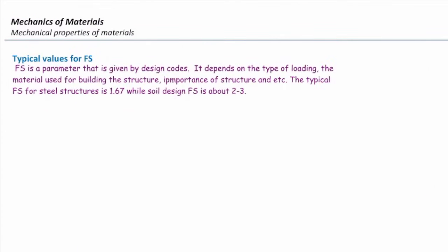The typical value for factor of safety is about 2 to 3. It has to be over than 1. For steel design structures, it's about 1.67. It depends on the importance of the structure. It depends on what kind of loading that structure will experience during its service life and many other factors. And these factors of safety are usually given to us by building codes or design codes. So we do not select them.